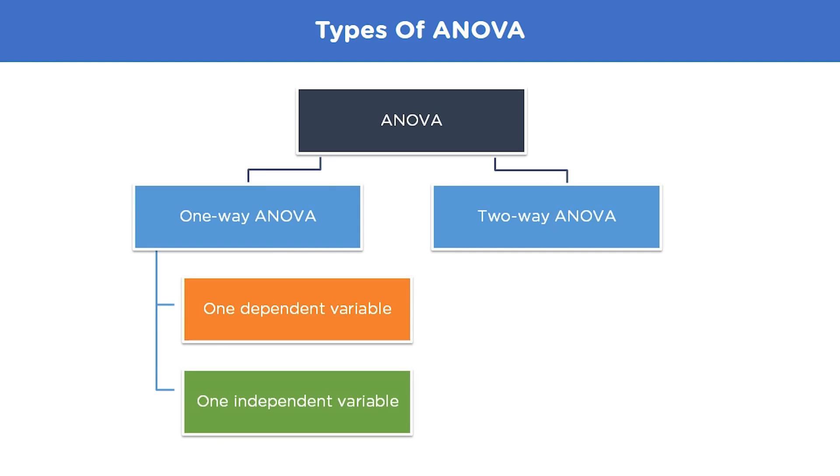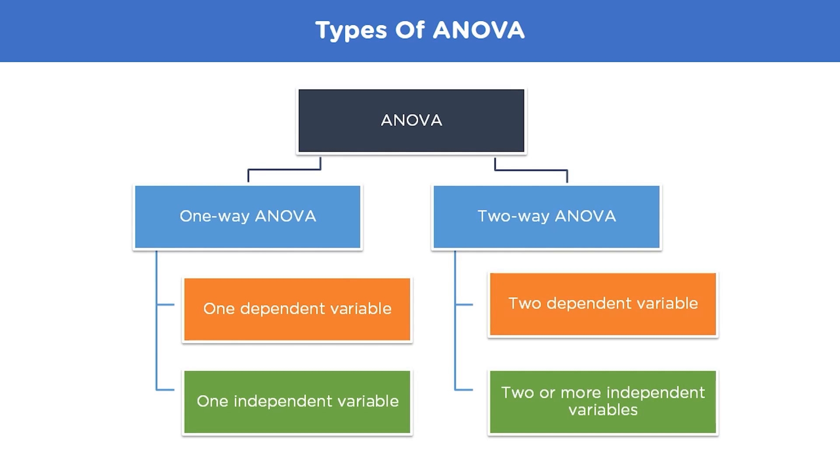For example, if we want to compare whether or not mean output of three workers is the same based on the working hours of the three workers, we will use a one-way ANOVA. Now let's move on to two-way ANOVA. When factor variables are more than two, then it is said to be a two-way analysis of variance. For example, based on working conditions and working hours, we can compare whether or not the mean output of three workers is the same.